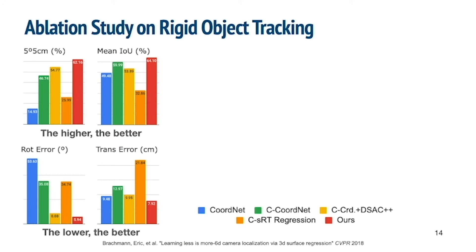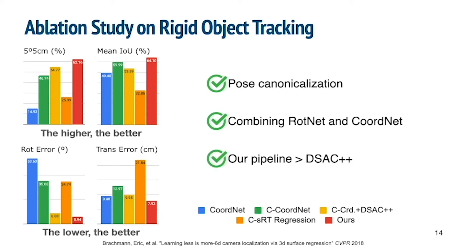Here we compare our method to several variants. Our results indicate that pose canonicalization is always beneficial, and combining together rotation net and coordinate net significantly outperforms using each of them alone. Also, our way to make the pipeline end-to-end differentiable performs better than DSAC++.